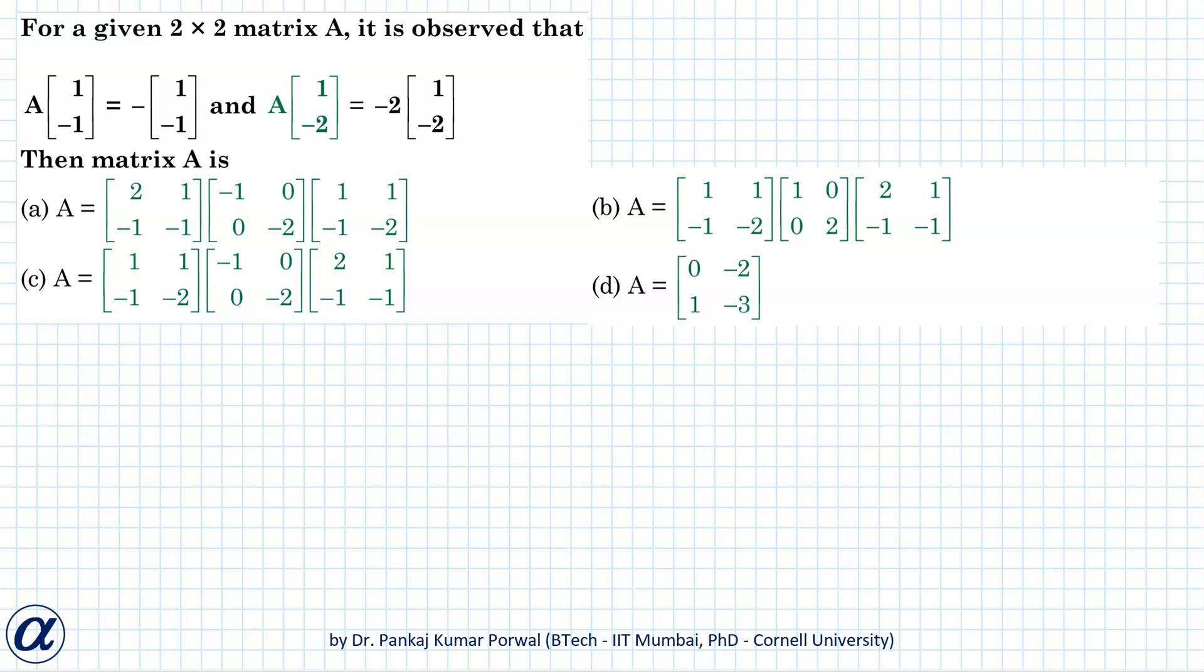In this question we are given that for a given 2 by 2 matrix A it is observed that when we multiply the matrix with vector [1, -1] we get -1 into the same vector [1, -1].